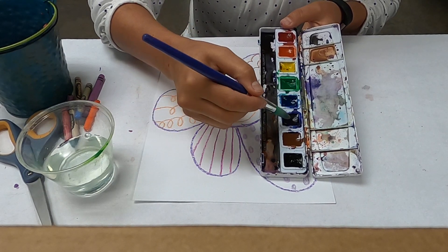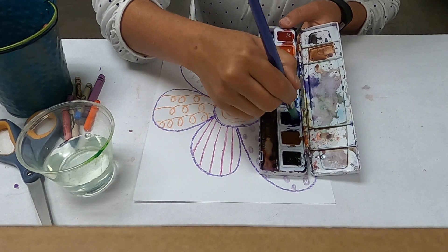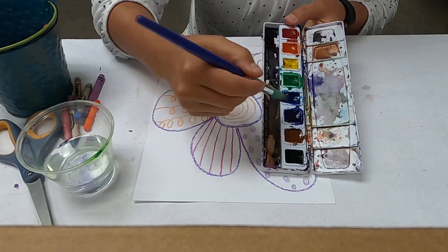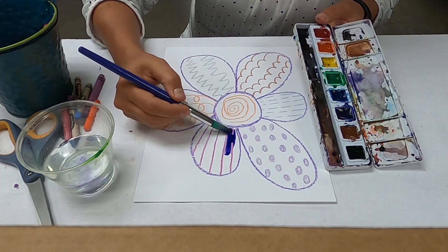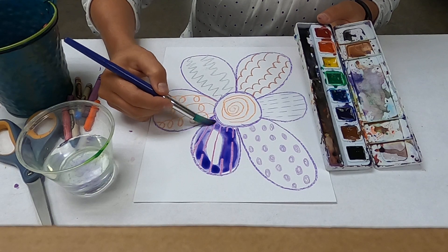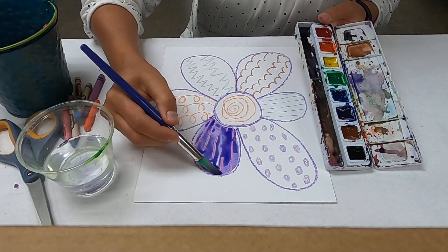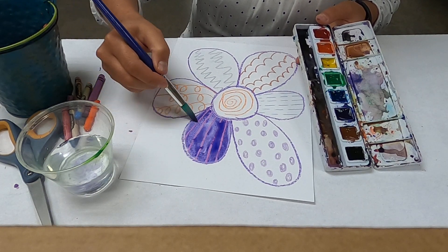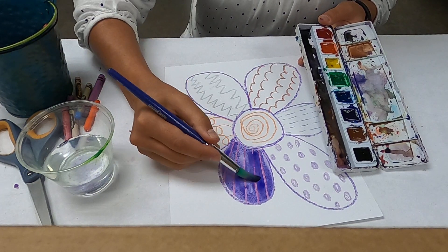So I'm going to use any color I want to fill in these petals. So what happens when you paint over the lines? Oh look at that, they reappear. So you're going to paint right over your crayons and the watercolor will actually paint right over top of the crayons but the crayons will reappear.